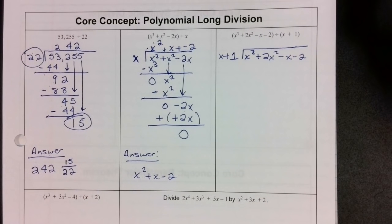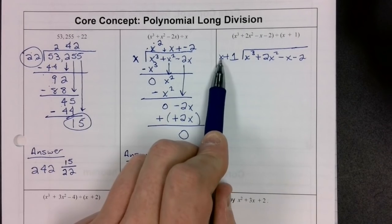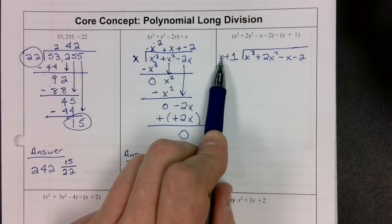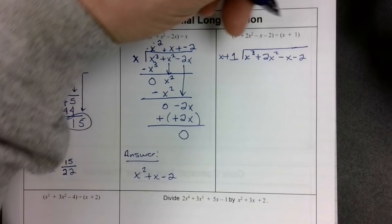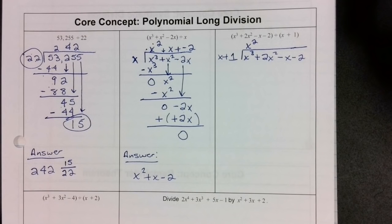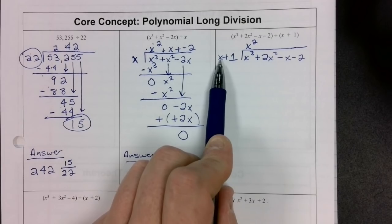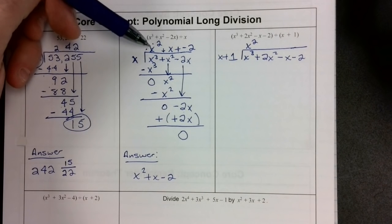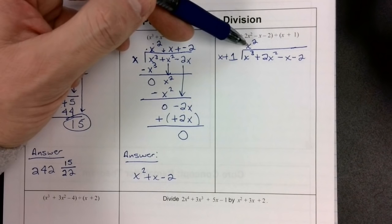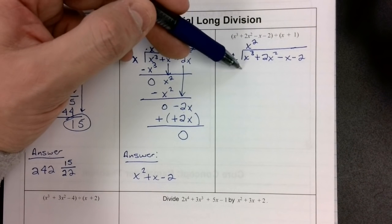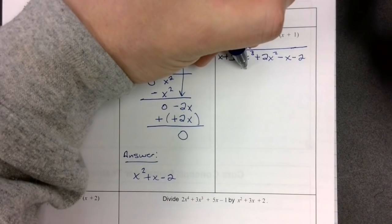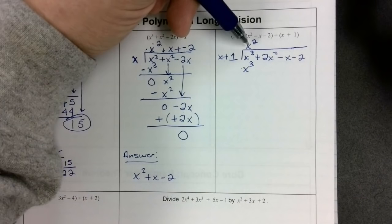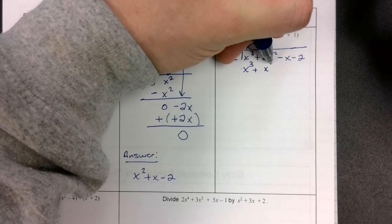I look at this first term out here — just the x — and I say: what do I need to multiply x by to get x to the third? We need to multiply x by x squared to get x to the third. You only have to look at the first term and ask what you need to multiply it by to get that leading term. Next, we take x squared times both terms in the divisor: x squared times x is x to the third, and x squared times 1 is x squared. Now we need to subtract the whole thing, putting the expression x to the third plus x squared in parentheses and distributing the subtraction sign.